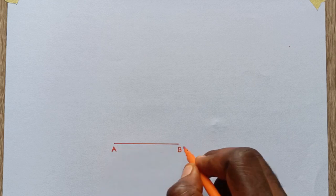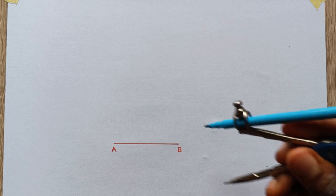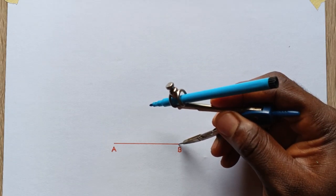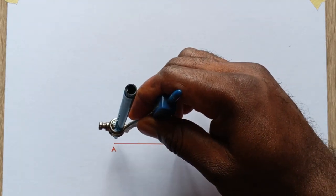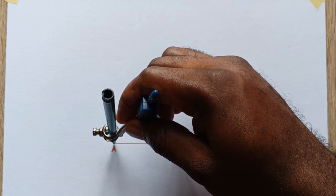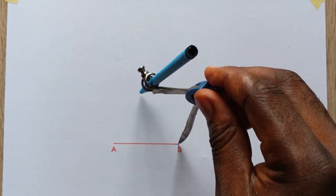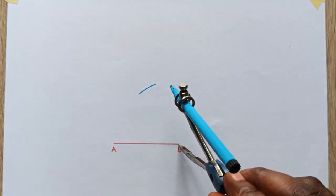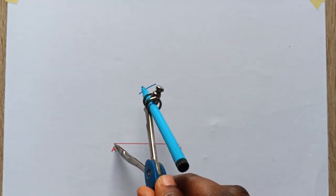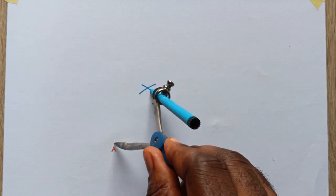The next step is to open your pair of compasses to this direction. You stand at this point and you now open your pair of compasses. Once you open your pair of compasses, you cut an arc here and then you also stand at this point and you cut another arc.